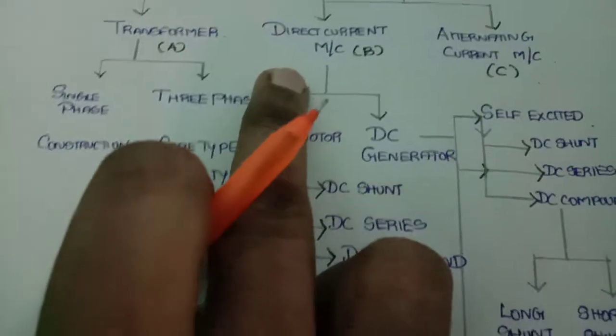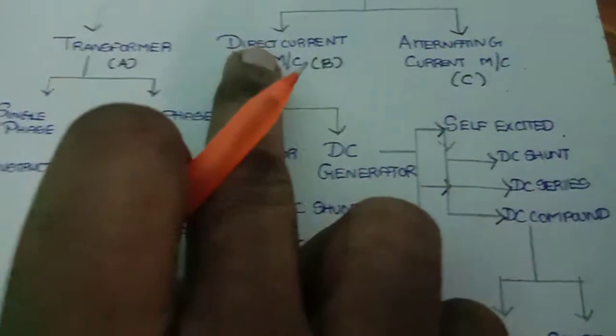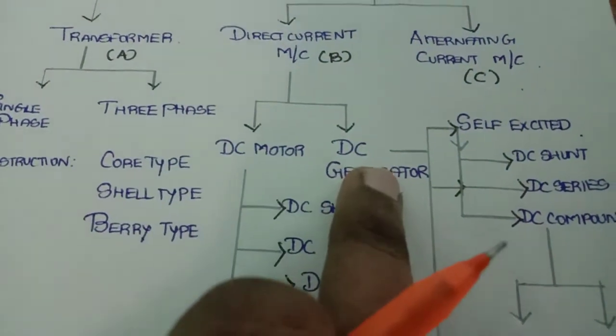In the rotating part, I am going to discuss direct current machine and alternating current machine. What is a direct current machine? A machine may be classified as either a motor or a generator.